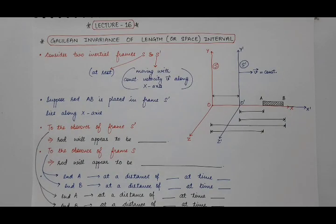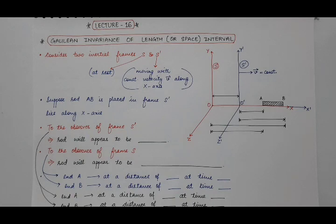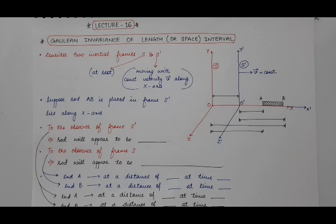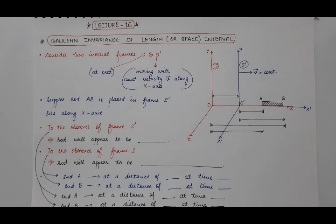Good morning students. In this lecture of mechanics, we will discuss one of the most important topics from the examination point of view. We will prove the Galilean invariance of length or space interval — that length is Galilean invariant. We will also prove that time is Galilean invariant, meaning length and time don't change under Galilean transformations. Velocity is Galilean variant, and acceleration is also Galilean invariant. We will prove all of this. First: Galilean invariance of length or space interval.